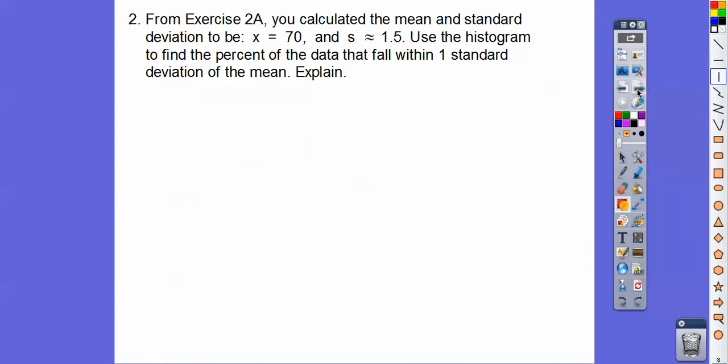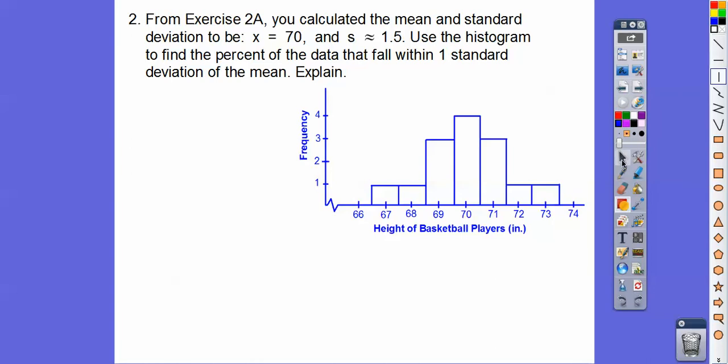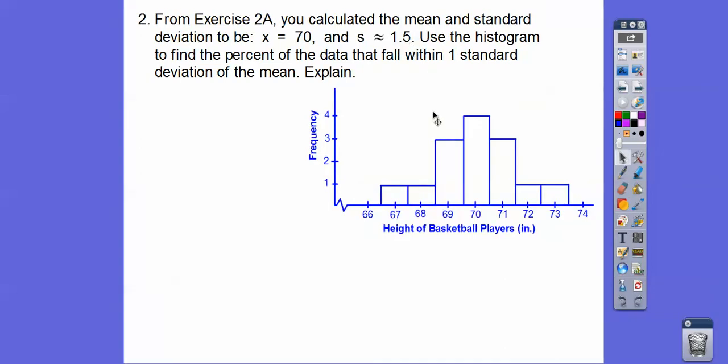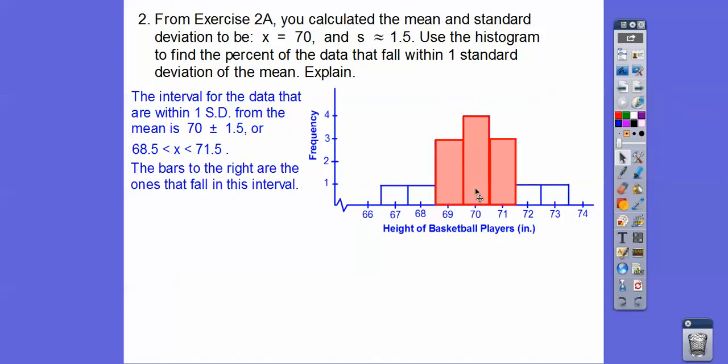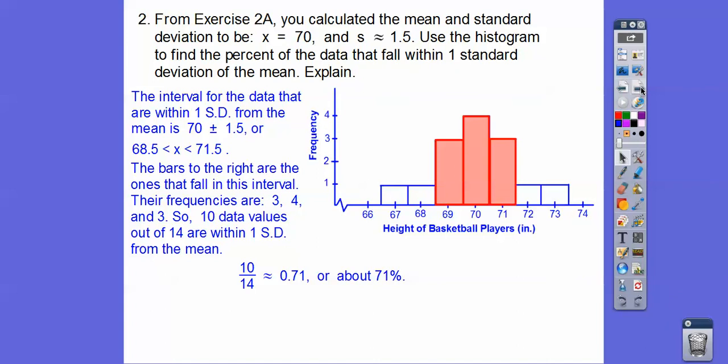So now let's use that histogram to find the percent of data that fall within one standard deviation of the mean. Remember, the standard deviation is 1.5. Here's the mean at 70 right here. If we go back 1.5, that would take me to 68.5, and go up 1.5, that would take me to 71.5. So we're going to add and subtract the 1.5, and that will give us our interval. This one goes up to three, this one goes up to four, this one goes up to three. So there's 10 data values out of the 14 that are within one standard deviation from the mean. So 10 fourteenths is about 71%.